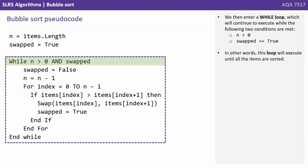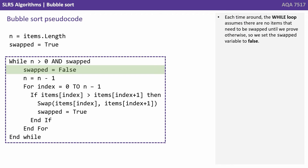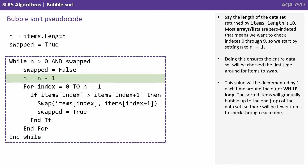We enter a while loop which will continue to execute while the following two conditions are both met. Each time around the while loop assumes there are no items that need to be swapped until we prove otherwise, so we set the swap variable to false. Say the length of the data set returned by items.length is 10. Most arrays or lists are 0 indexed, that means we want to check indexes 0 through 9, so we start by setting n to n-1. Doing this ensures the entire data set will be checked the first time around. This value will be decremented by 1 each time around the outer while loop. The sorted items will gradually bubble up to the end of the data set, so there will be fewer items to check through each time.